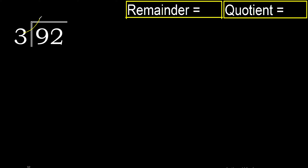3 multiplied by 4 is 12. 12 is greater than 9, therefore not 4. 3 multiplied by 3 is 9. 9 is not greater than 9, therefore 9 is the digit.